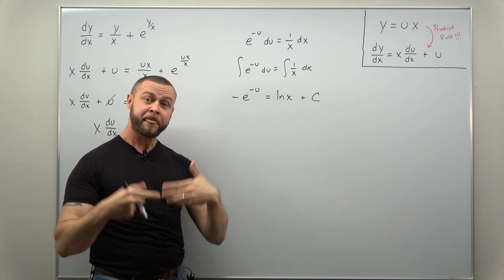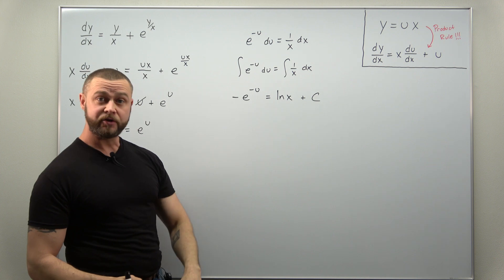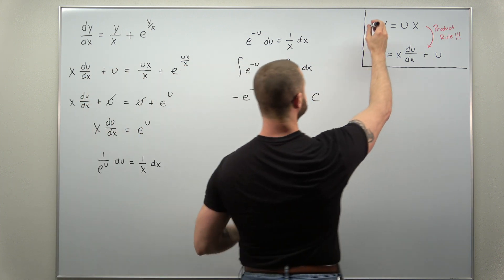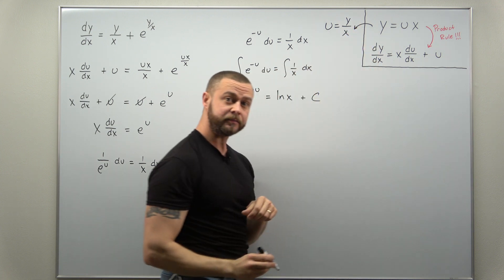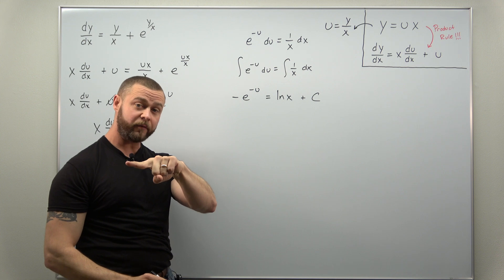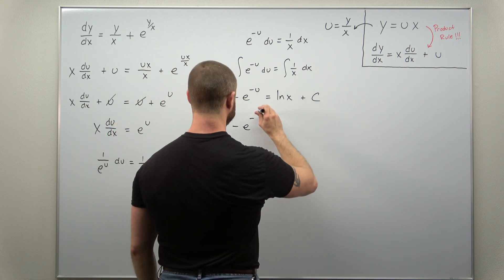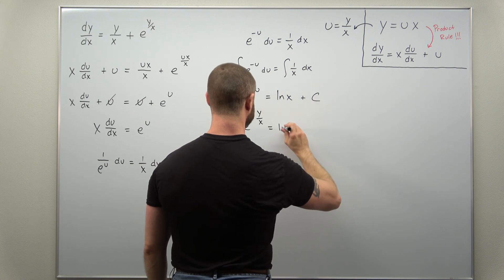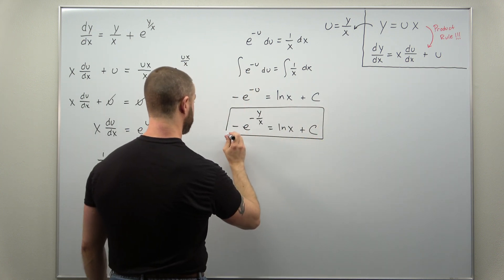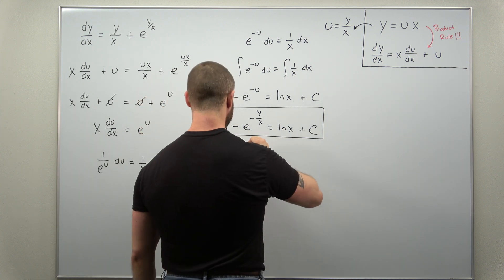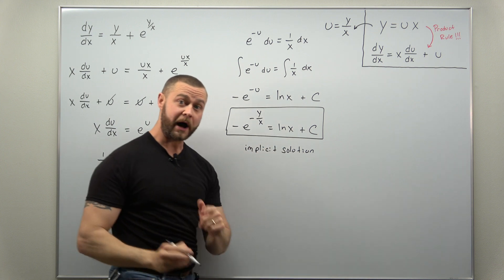The only other thing we need to do to get our solution is convert back u in terms of x and y. Don't forget your substitution: y equals u times x, which is equivalent to u equals y divided by x. Plugging that in and replacing all u's with y over x, we get negative e to the negative y over x equals natural log of x plus C. This is our solution in implicit form — an implicit solution, since it's not solved explicitly for y in terms of x.